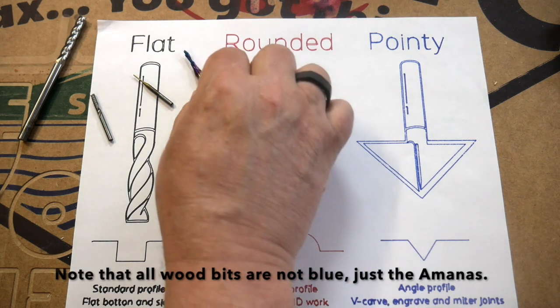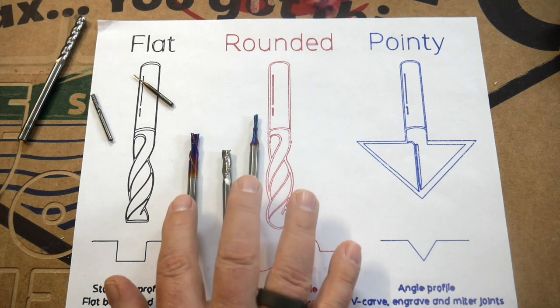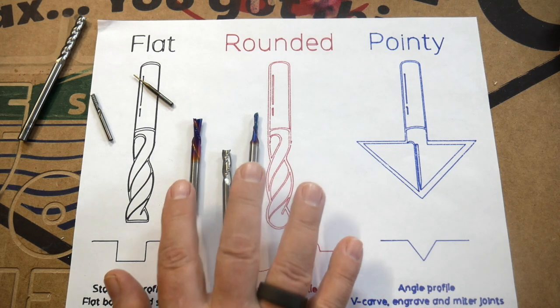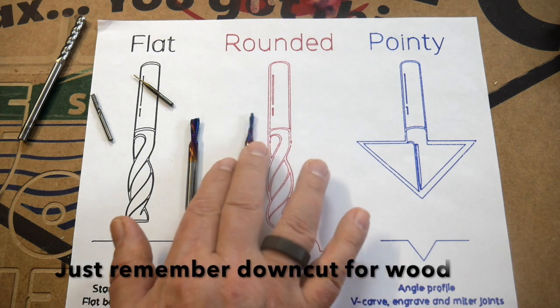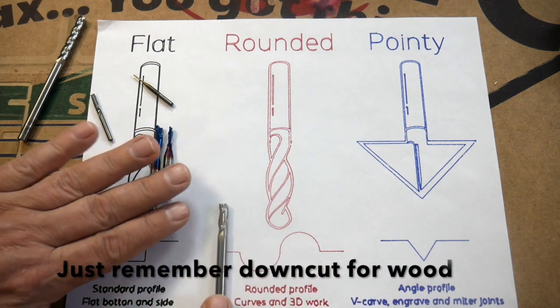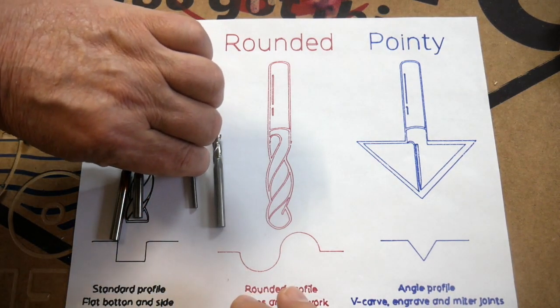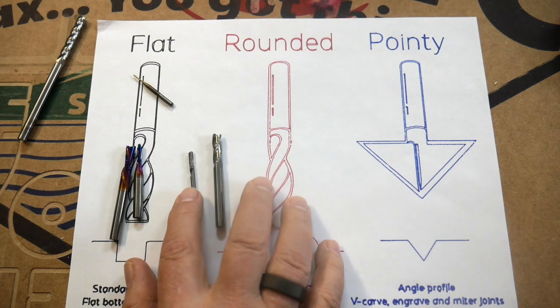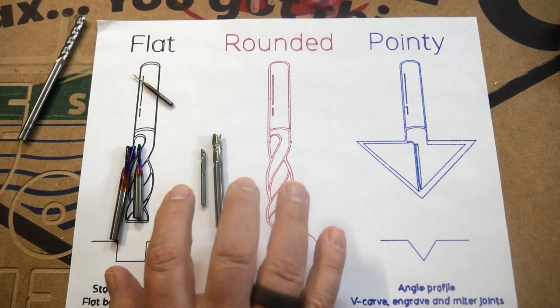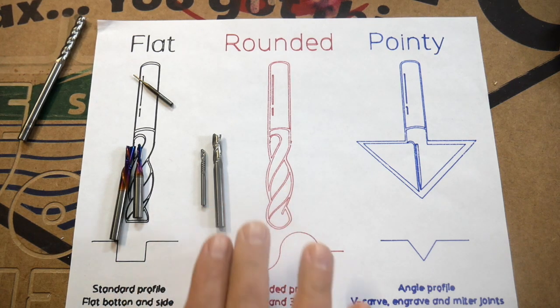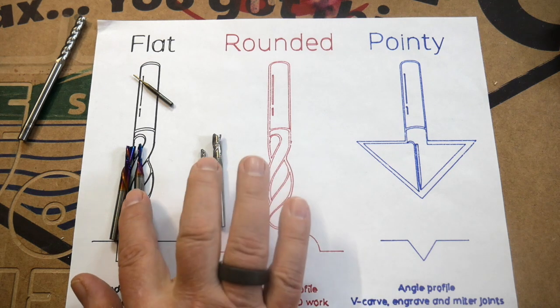So this will create a smoother side and bottom than this will on wood. That's why these particular bits here—these blue ones Carbide is now selling as well—are made by a company called Amana Spectra, and they're my absolute favorite bits for woodworking. But for something like aluminum, you'll notice even on the smaller one, this one is for plastics, that those bits pull upward.